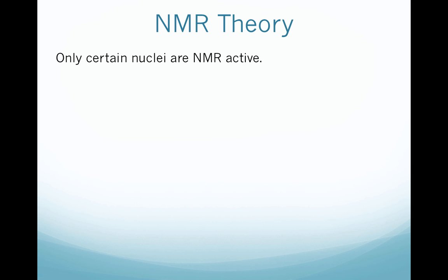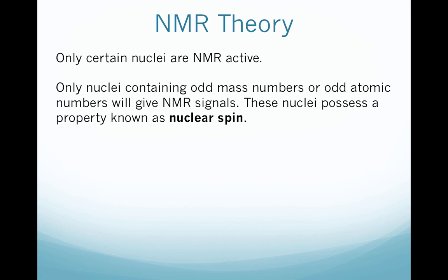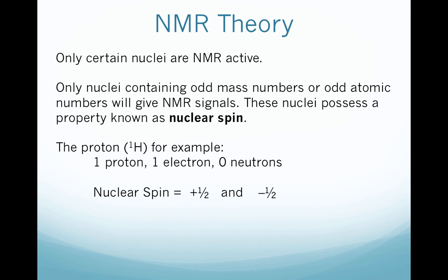Only certain nuclei are actually NMR active. The ones that are NMR active are those that have an odd mass number or an odd atomic number. These nuclei possess a special property known as nuclear spin. The most common one that we're going to spend a lot of time looking at is proton NMR. So a proton, or just hydrogen, has one proton, one electron, and zero neutrons. This has an atomic number of 1, which is odd.